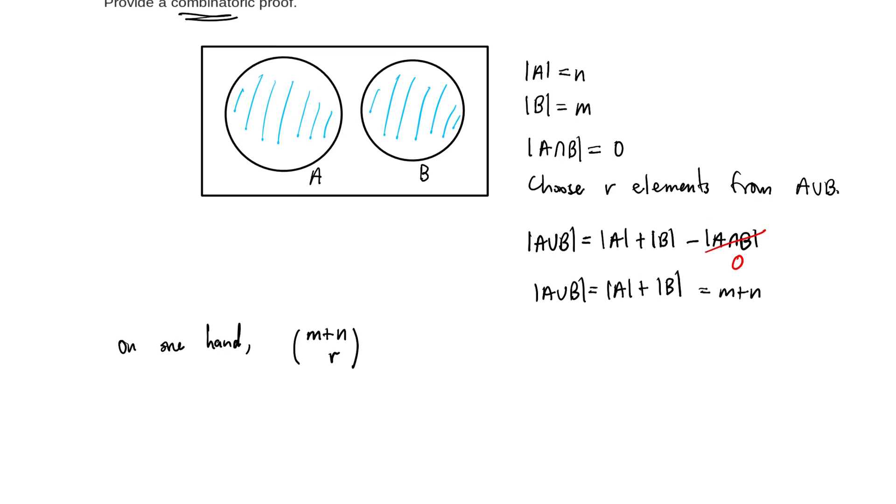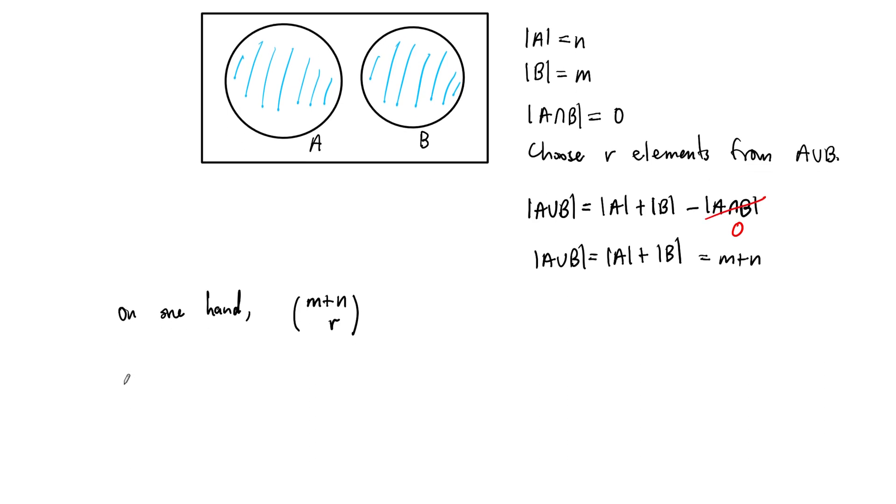Now, on the other hand, we could do something slightly different. On the other hand, let's suppose, or let's let some number k be less than or equal to r and greater than or equal to 0. So we fix this number k here. And let's say we start by choosing k elements from set A. So first we choose k elements just from set A.